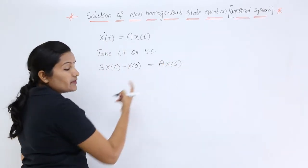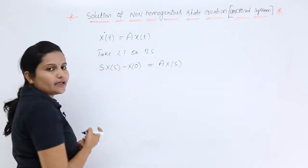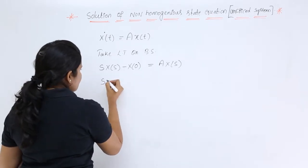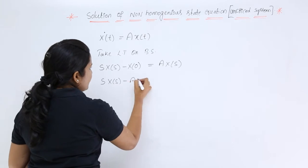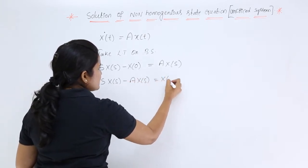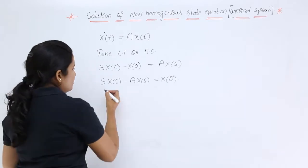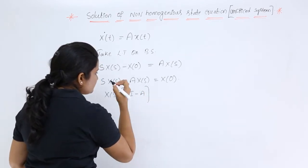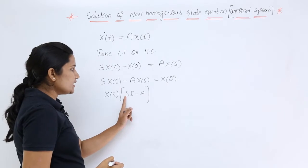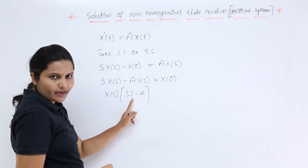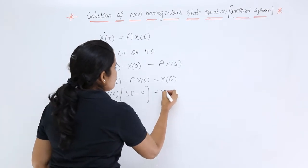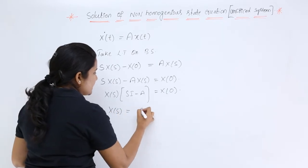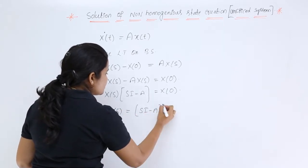Now we have two X(s) terms. Rearranging by moving A·X(s) to the left side and x(0) to the right side gives: s·X(s) - A·X(s) = x(0). Taking X(s) as common gives (sI - A)·X(s) = x(0), where s is expressed as a matrix using the identity matrix. Therefore, X(s) = (sI - A)^{-1} · x(0).